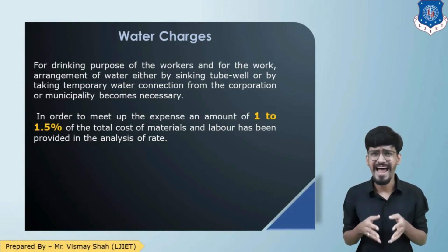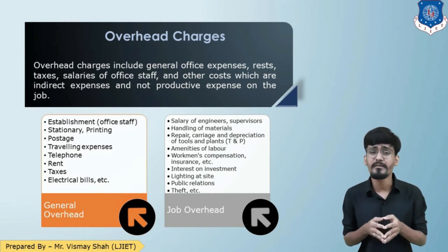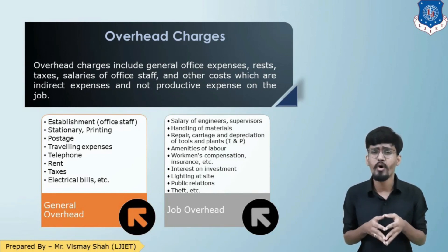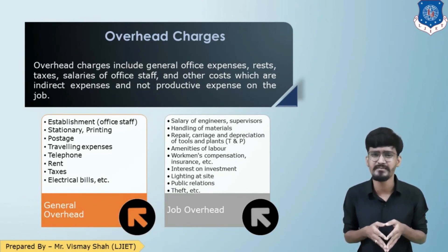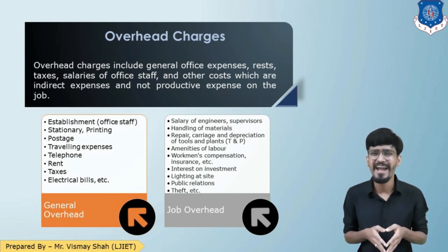The last terminology is overhead charges. Overhead charges include general office charges such as stationery, administrative costs, rent, and salaries which are not contributing directly to the construction — these are indirect costs and do not have any productive expense on the job. Overhead charges can be further divided into job overhead and general overhead. Job overhead consists of salaries of employees, handling of materials, repair, carriage and depreciation for tools and plants, amenities for laborers, workmen's insurance, interest on investment, lighting at site, public relations, etc. General overhead includes establishment of office, stationery, printing, postage, taxes, rent, traveling expenses, etc.